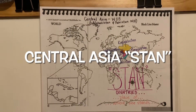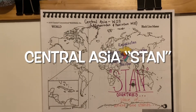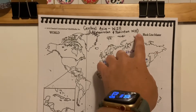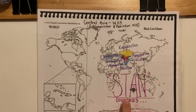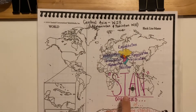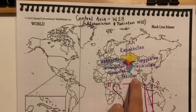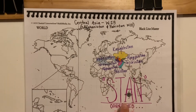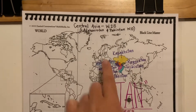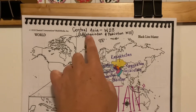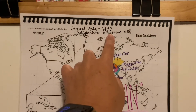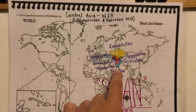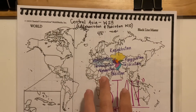Skipping ahead to cycle 2, week 23. I just finished week 10, but I wanted to go ahead and add this one in so that you guys can see. I put all of the Stan countries together because I have a song where all of the Stan countries fit together. Afghanistan and Pakistan, which are down here, go with week 10, but I added them to week 23.